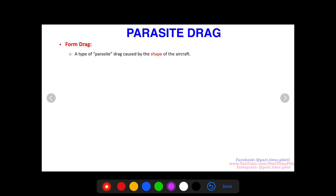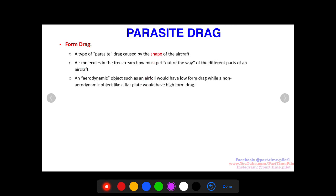Form drag is a type of parasite drag caused by the shape of the aircraft. Air molecules in the freestream flow must get out of the way of the different parts of an aircraft. An aerodynamic object such as an airfoil of a wing would have low form drag, while a non-aerodynamic object like a flat plate would have high form drag.